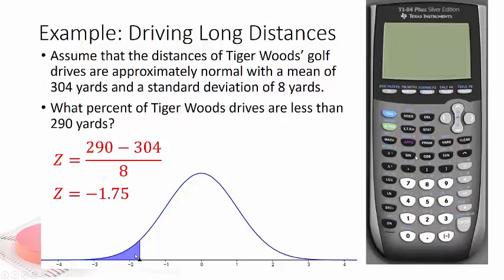Well, the table automatically gives you that. So if you look up, again, you're going to have to use the right side, negative 1.7, and then look up the 05 header, you should get 0.0401 or 4.01%.